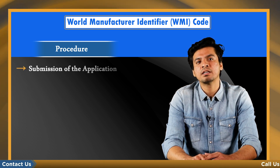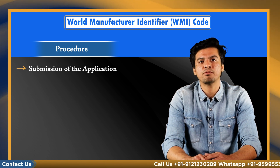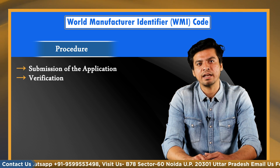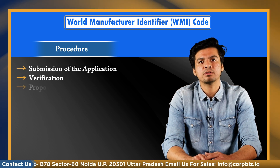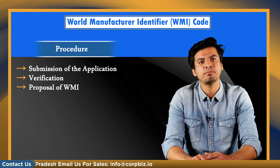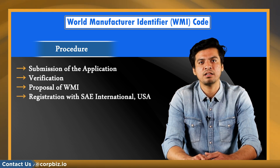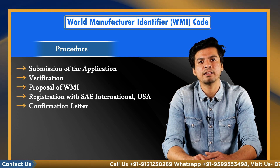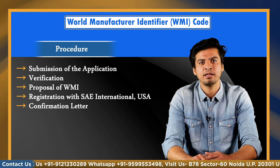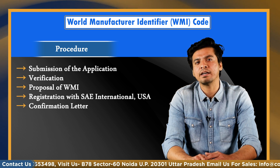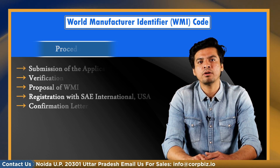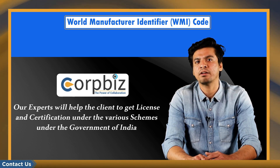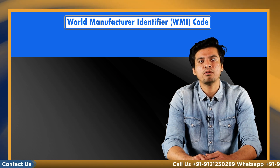The procedure for WMI code registration: Step one is submission of the application — COVBIS experts will prepare all documentation and file the application on your behalf and submit it to the BIS. Step two is verification — BIS officials will verify the documents and check whether all documents are received. Step three is proposal of WMI code as per the series entry in the BIS database. Step four is registration with SAE International USA, where the WMI code is assigned by the Society of Automotive Engineers. Step five is a confirmation letter from SAE International. Step six is issuance of the WMI code. Contact COVBIS to get detailed information about the WMI code procedure and make the process hassle-free. Visit COVBIS to learn more about WMI code registration.